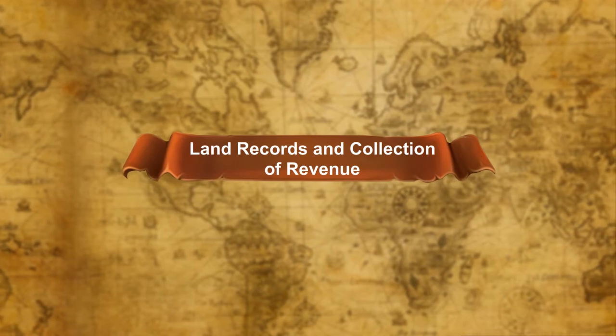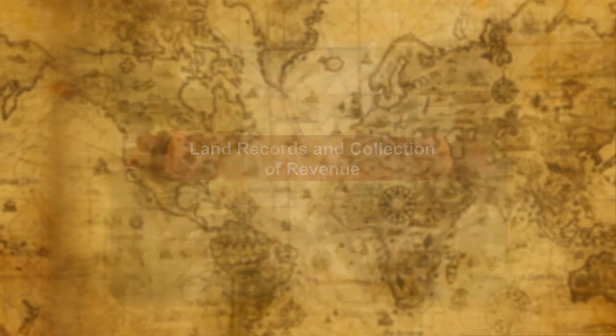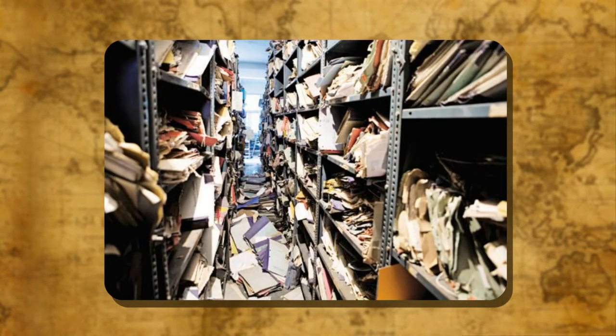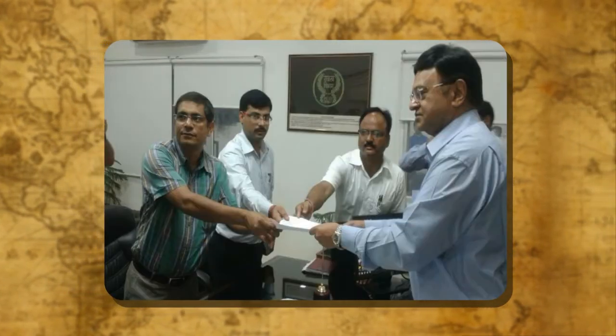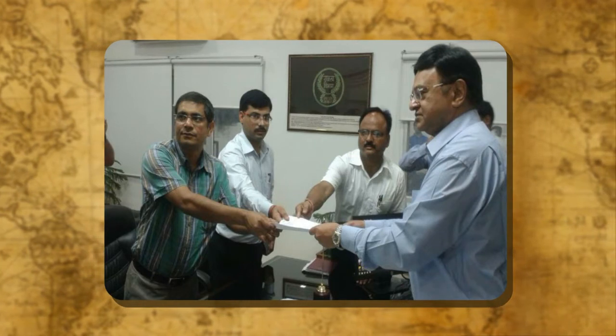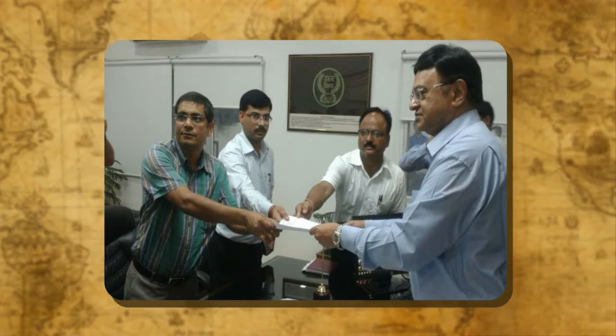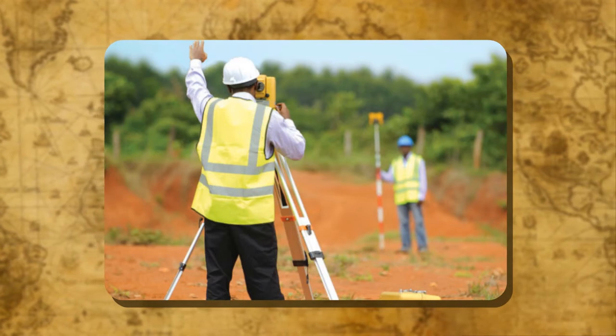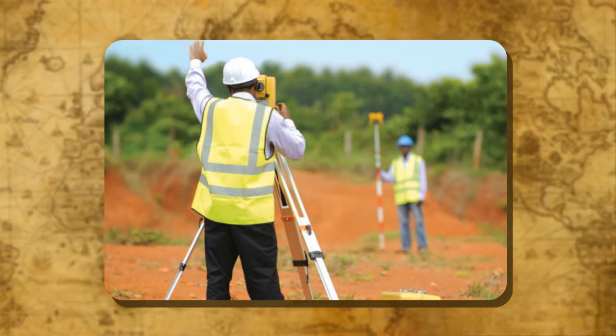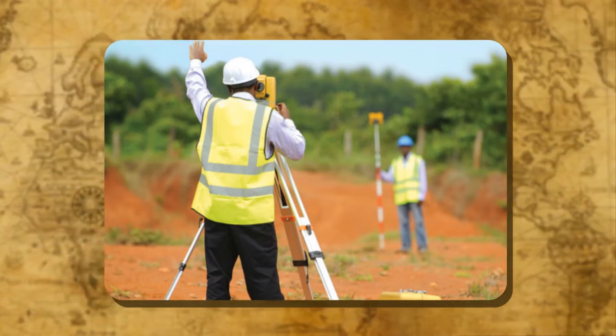Land records and collection of revenue. Maintenance of land records and collection of revenue is an important function of the district administration. The DM is helped in this work by officers like Tehseildars, Naib Tehsildars, Kanungos and Patwaris. They help in the measurement of land, classification and assessment of the products, and levying of revenue.